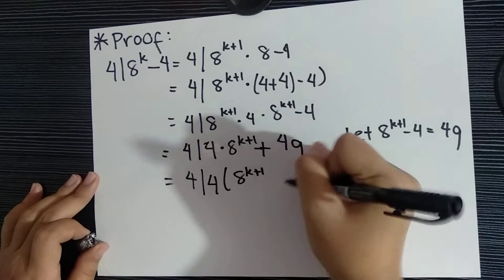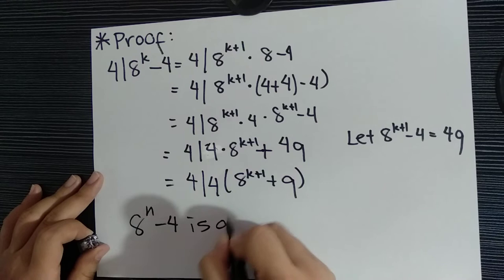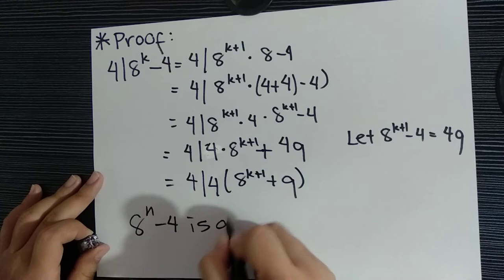So we can conclude that 8^n - 4 is divisible by 4, for n ∈ all positive integers. And that is all. Thank you.